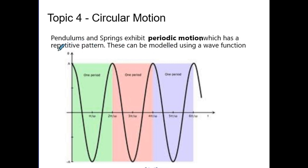Those are pendulums and springs — they undergo harmonic motion. But periodic motion is a bit of a broader term for that. Periodic motion is anything that's repetitive, and another type of repetitive motion is circular motion. So we're covering everything that's going in circles and everything that's going back and forth. Since we've finished covering harmonic motion, we're now going into things going in a circle.